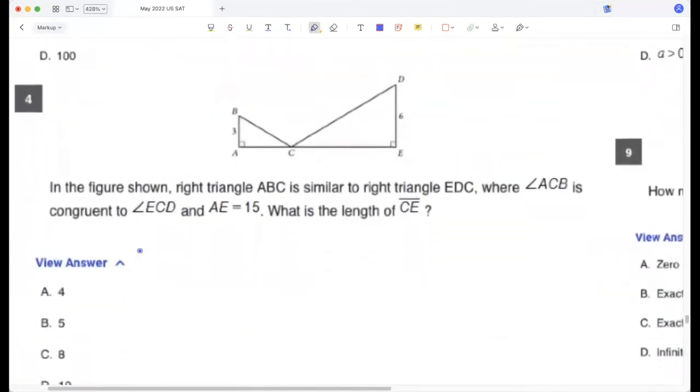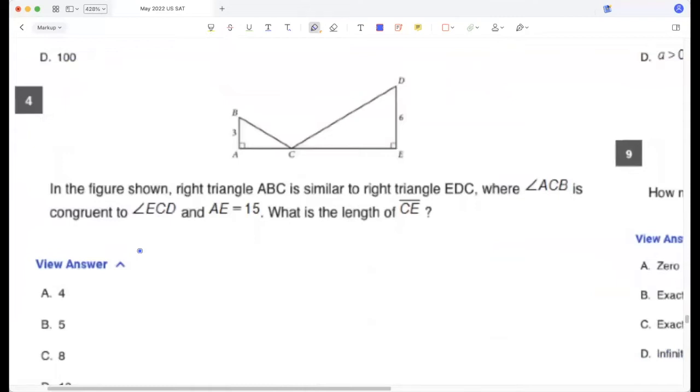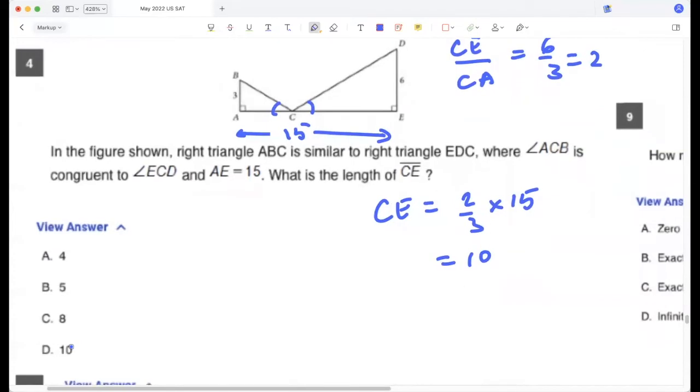In the figure shown, right triangle ABC is similar to right triangle EDC where angle ACB is congruent to angle ECT. AE is 15. What is the length of CE? Okay, so CE to CA will be 6 to 3, which is 2, because the corresponding sides will be in the same ratio. So CE will be 2/3 of 15, right? Because the ratio of this to this is 2 is to 1. So that's 10. Option D.